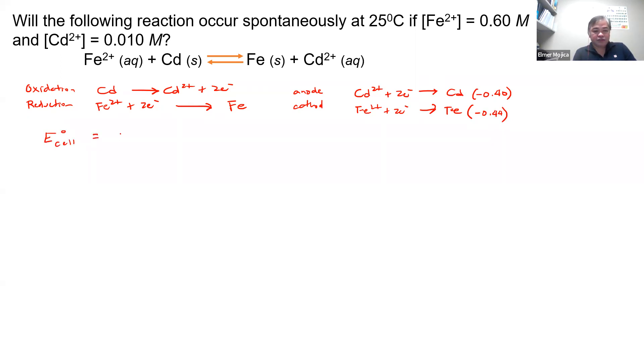So looking at the formula, E cell equals to E cathode minus E anode. So this is a standard condition. So you replace it, the one that has in the cathode negative 0.44, and this one would be around negative 0.40.